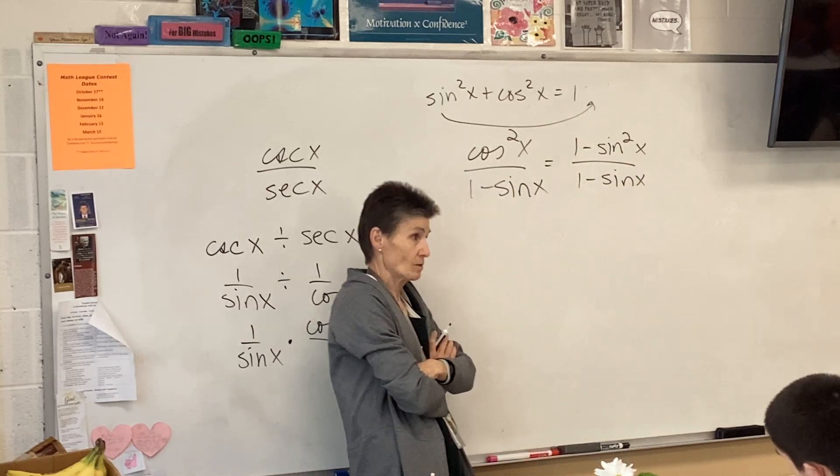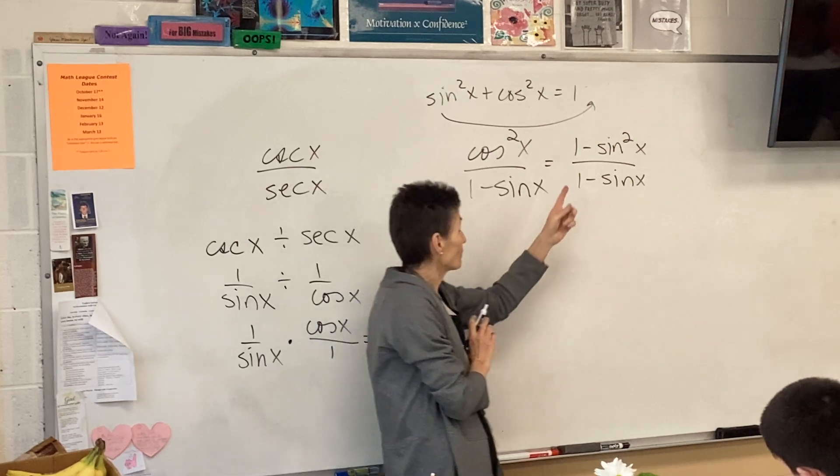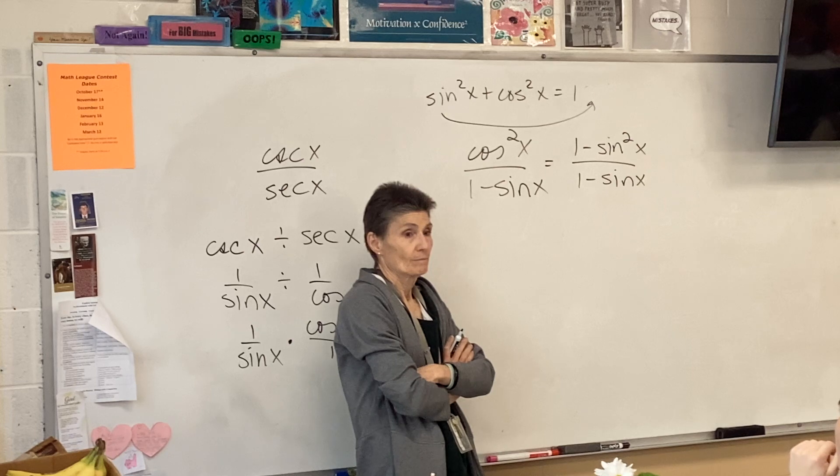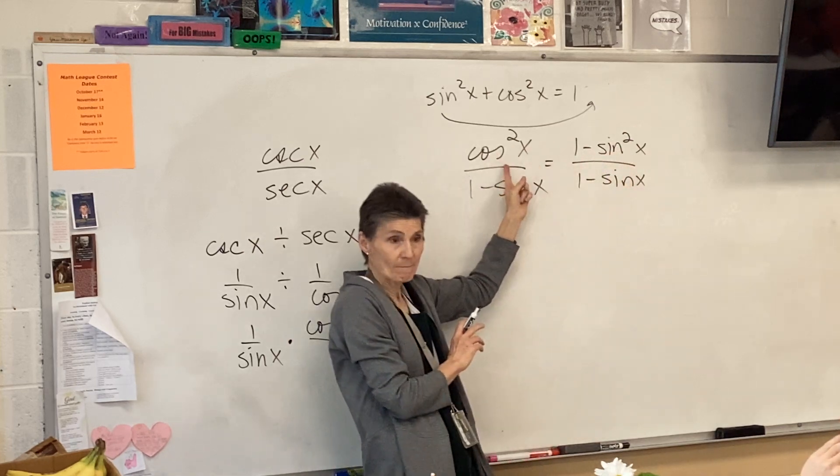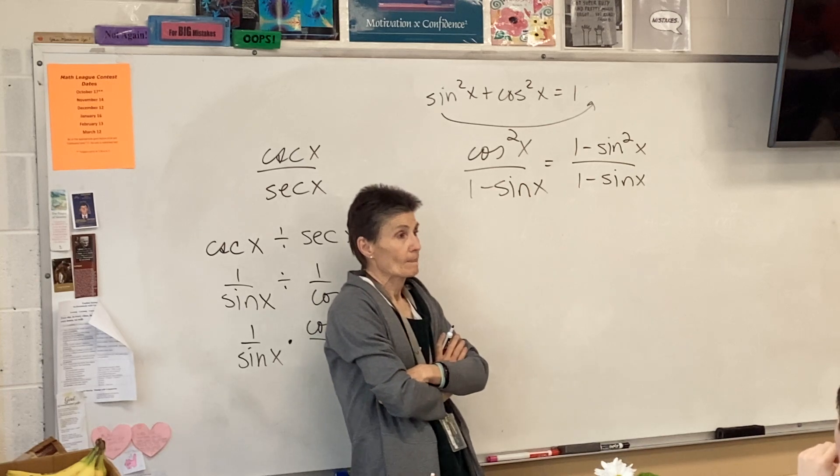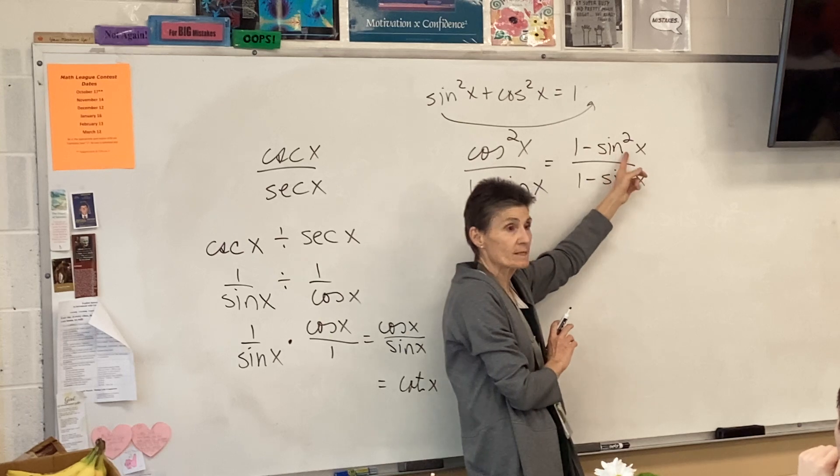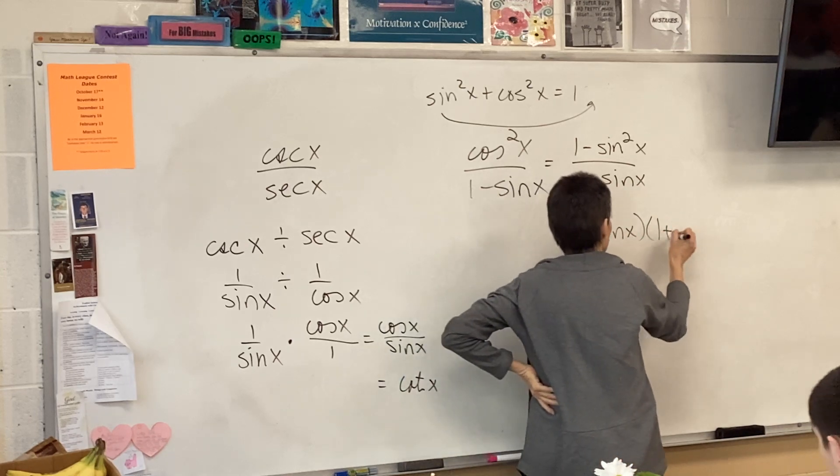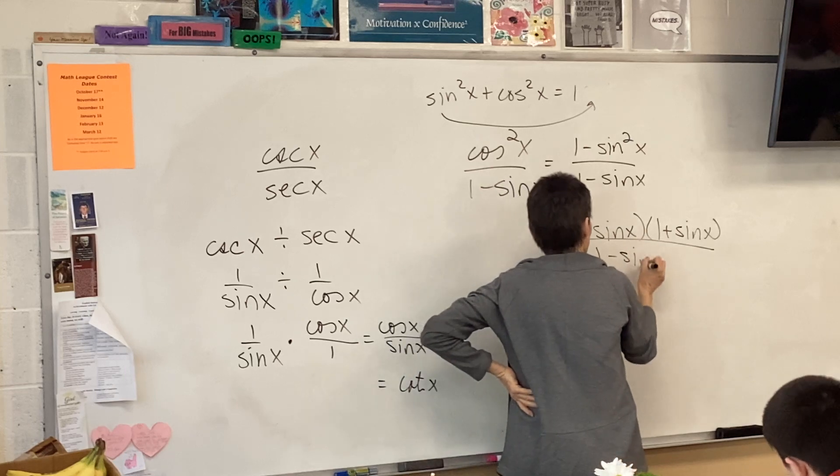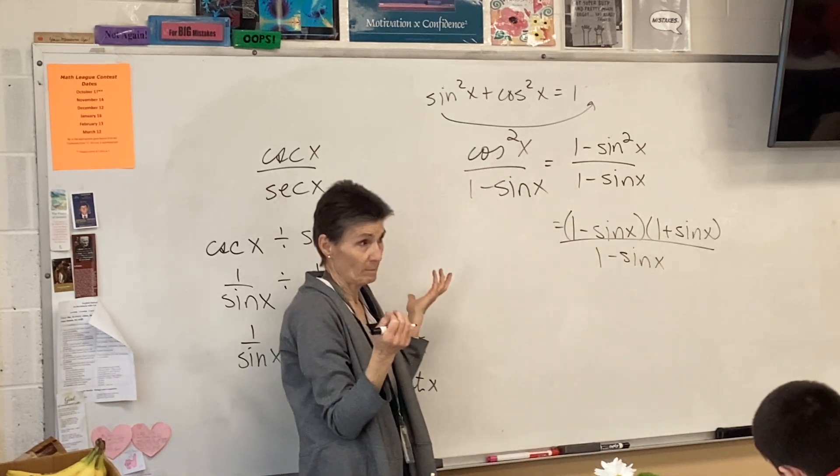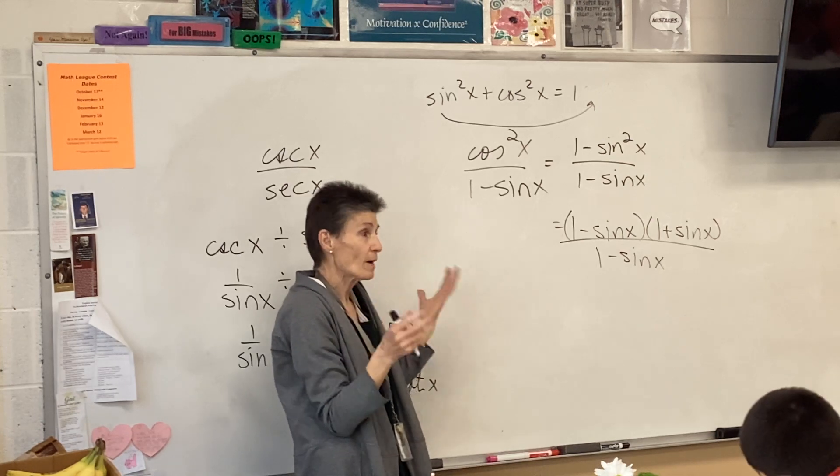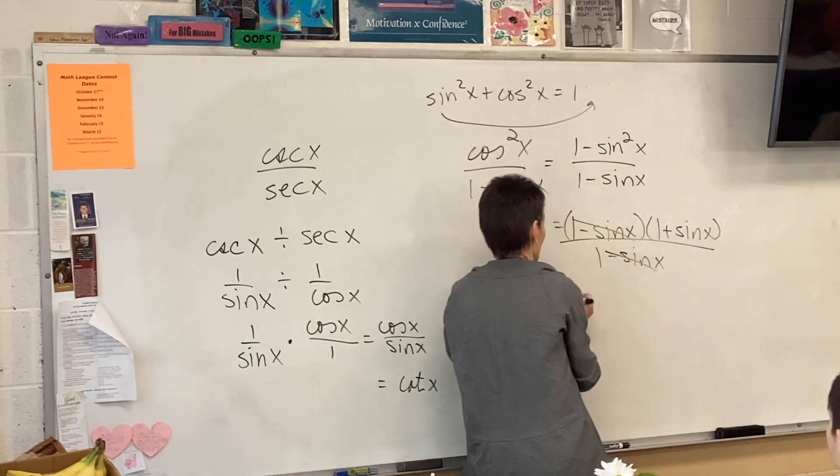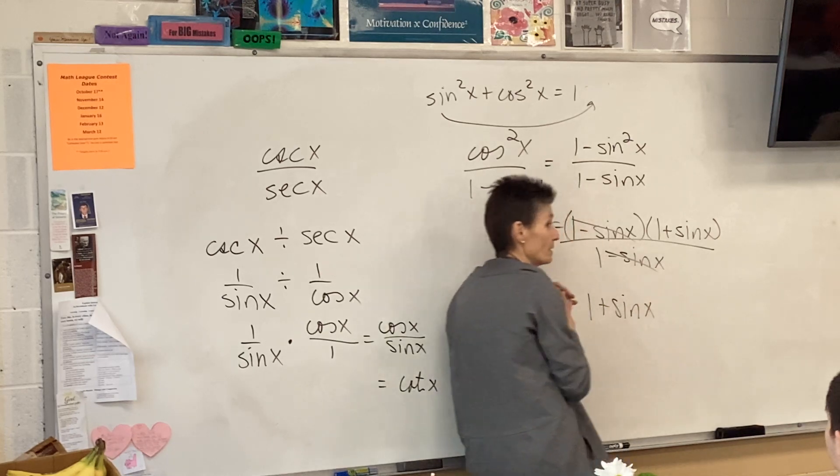Remember, you have an identity that says sine squared plus cosine squared is one. So if you move this to the other side, it would say that cosine squared is one minus sine squared. Now, nothing cancels at this point. However, what can we do with our numerator? This is factorable. It's the difference of squares. So, one minus sine, one plus sine.